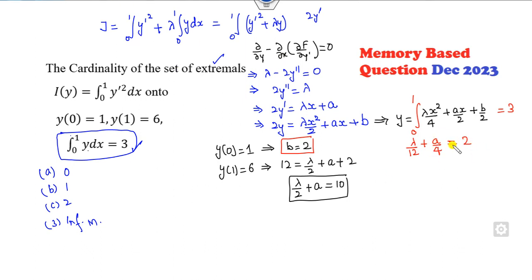I can multiply this by 4 because I can see a is a. So it's lambda over 3 plus a is equal to 8. Now you can subtract them. What will happen? Lambda over 2 minus lambda over 3 is 2. So you can see it's 6. Lambda is 12. Once I see lambda is 12, you can see from here a is 4. Once you get a, I can substitute here.